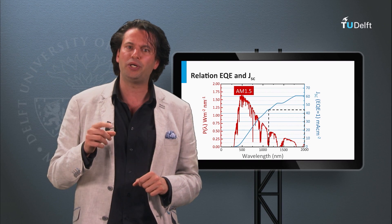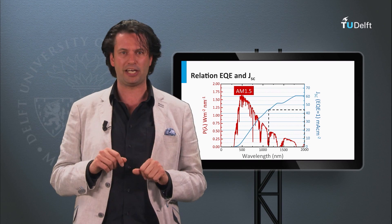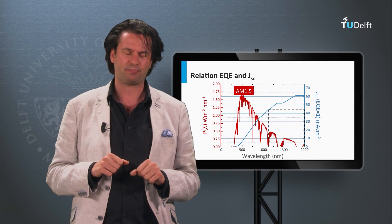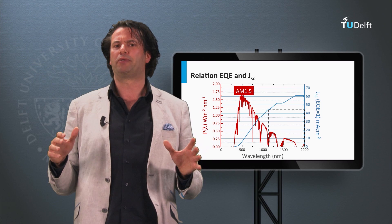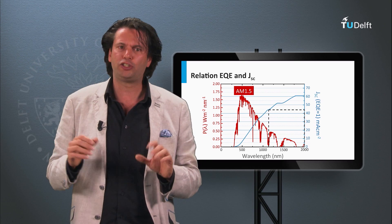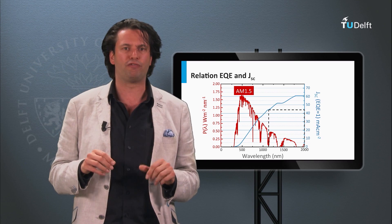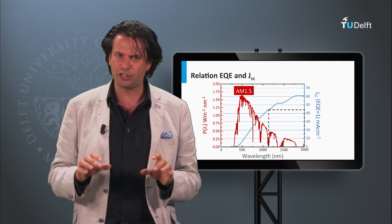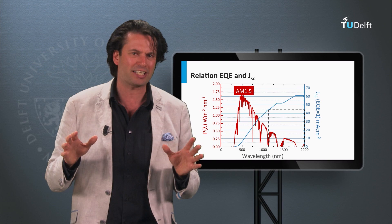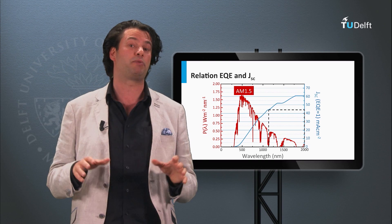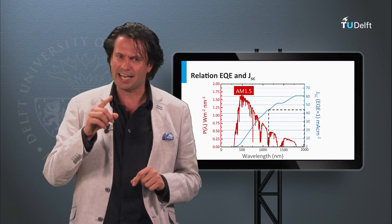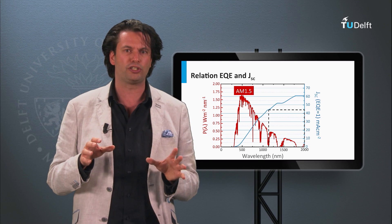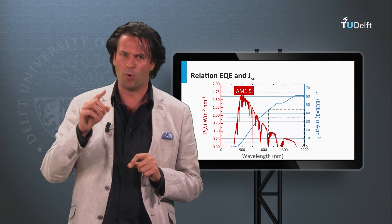This provides you an easy tool to make realistic estimations of the possible photocurrents that various materials can generate. In summary, we have discussed how to determine the spectral utilization of a single junction solar cell. The band gap of the semiconductor material determines the theoretical maximum current density and open circuit voltage that can be obtained. In the next block, we will discuss the optimum performance of single junction solar cells under standard test conditions in more detail.